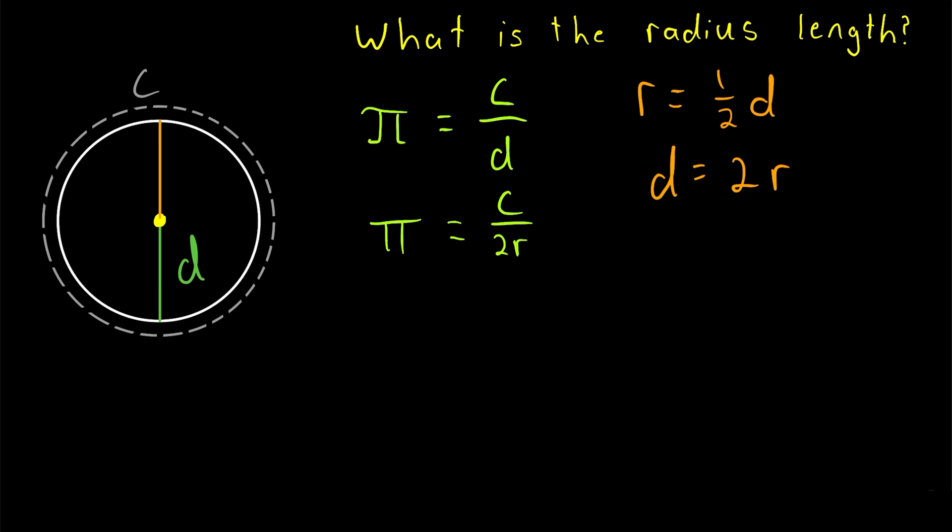So dividing both sides of the equation by C gives us pi over C. Pi divided by the circumference is equal to 1 divided by 2 times the radius.